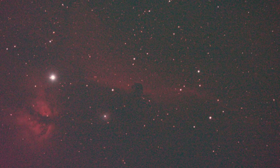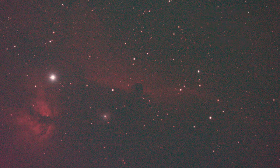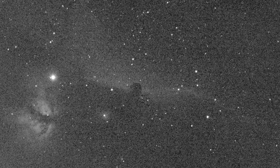Let me show you a single frame from the CLS filter. This is a 90-second exposure at ISO 1600 on the Horsehead Nebula. You can see that it has captured good enough details with this filter. Light pollution is cut dramatically. The Horsehead Nebula and the Flame Nebula are visible — a perfectly reasonable photo for 90 seconds. Let me show you the red channel only to see how much Hydrogen Alpha has been captured.